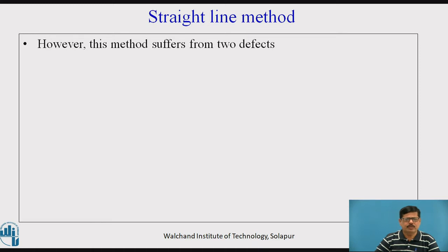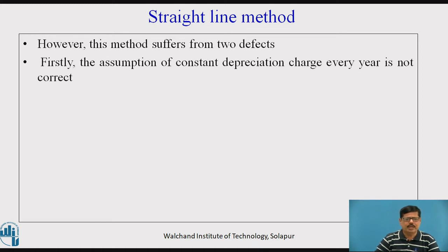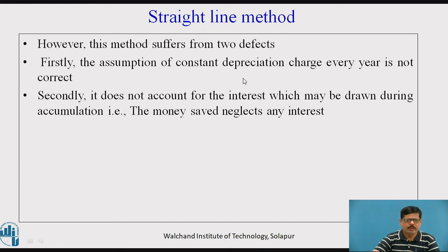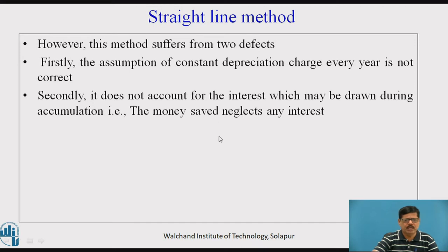However, this straight line method has two defects. First, the assumption of constant depreciation charge every year is not correct — depreciation never occurs uniformly. When the equipment is new, the depreciation may not be too high, so charges should actually be less in the initial years, but in this method it is applied uniformly throughout the lifespan. Secondly, the amount collected as the depreciation charge does not account for any interest which may be earned during the accumulation — that is, the money saved is neglected. Whenever you save the depreciation charge and put it in the bank, you would earn interest, but that is neglected in the straight line method.